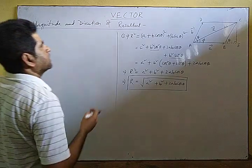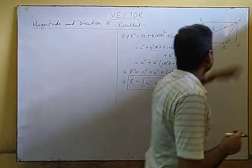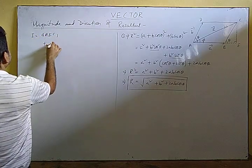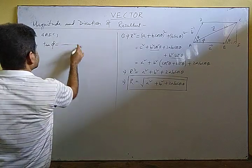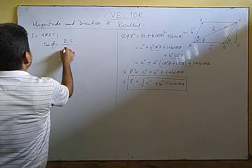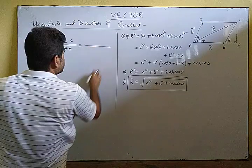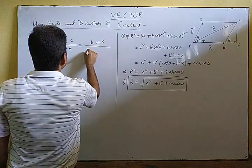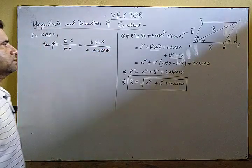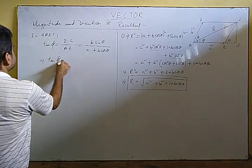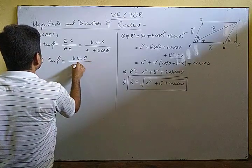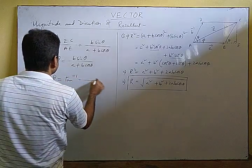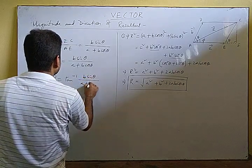For the direction of the resultant, we use angle φ in triangle AEC. tan φ = perpendicular / base = EC / AE = B sin θ / (A + B cos θ). Therefore φ = tan⁻¹(B sin θ / (A + B cos θ)). This gives the direction of the resultant vector.